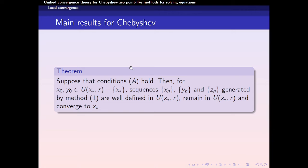The main result for this local convergence is this theorem. Suppose this condition A holds, then for x₀, y₀ belongs to the open ball U with center x* and radius R, sequences xₙ, yₙ, and zₙ generated by general method are well defined in the ball, remain in the ball, and converge to x*.